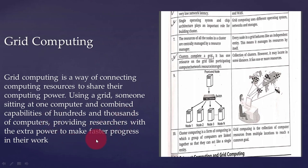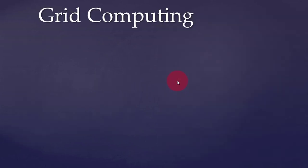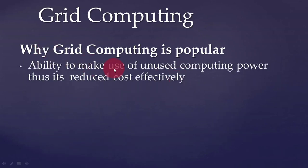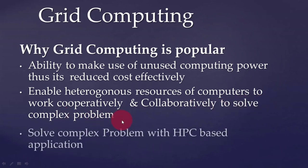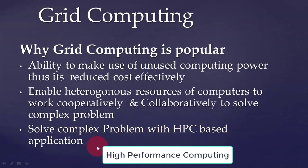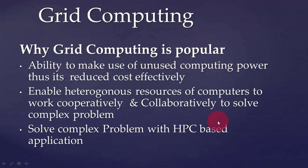Using a grid, someone sitting at one computer can combine the capabilities of hundreds and thousands of computers, providing researchers with extra power to make faster progress in their work. Grid computing became popular because of its ability to make use of unused computing power, thus reducing costs effectively. It also enables heterogeneous resources to work cooperatively and collaboratively to solve complex problems with HPC-based applications. HPC stands for high performance computing, and grid computing belongs to HPC.